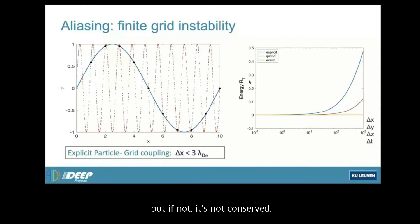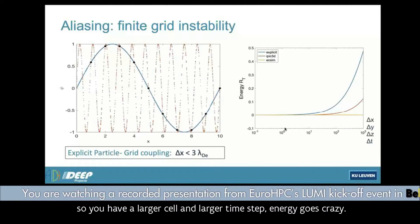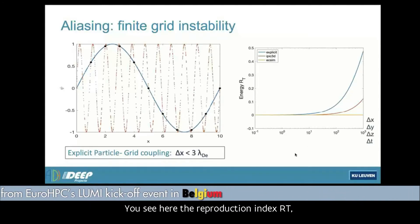The killer really is what is called a finite grid instability. So it's a lack of energy conservation. The fact that you are breaking the link between the electricity, magnetic field and the particle motion means that the energy is no longer conserved. Not exactly. So if your time step is very small, if the resolution is very small, it is conserved. But if not, it's not conserved. So you see here in blue that when your resolution starts to become larger, so you have a larger cell and a larger time step, energy goes crazy.